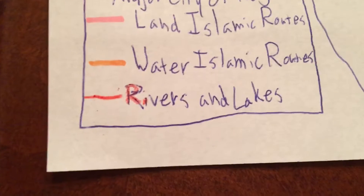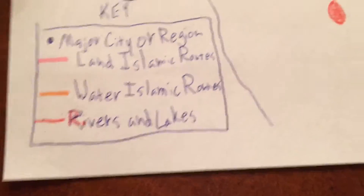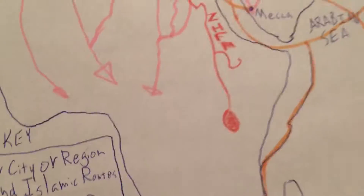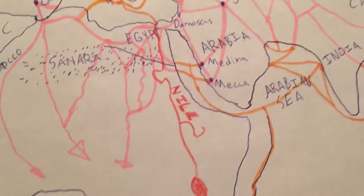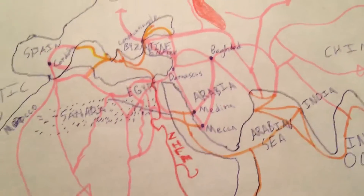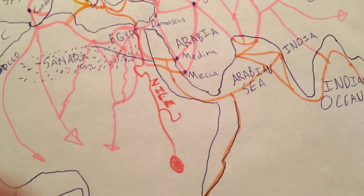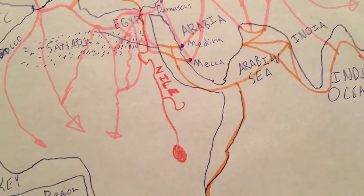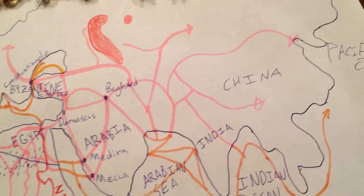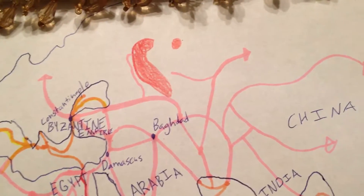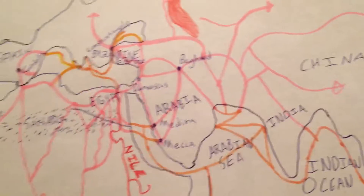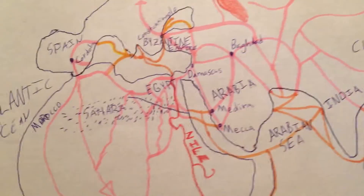Next is the red line for rivers and lakes. These are just some major rivers or lakes at the time — the Nile River of course and Lake Baikal, and those are pretty much the major ones.